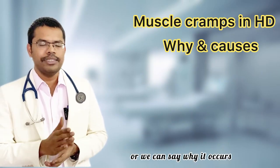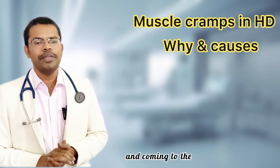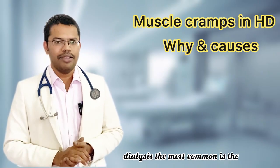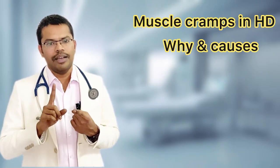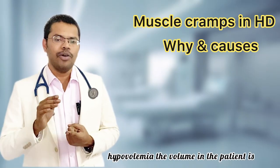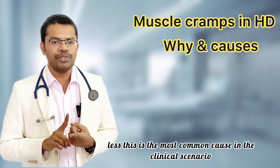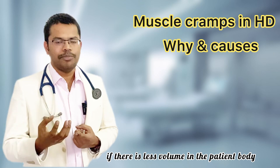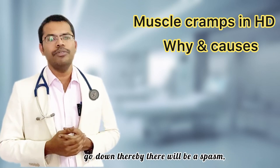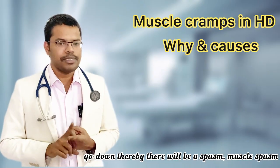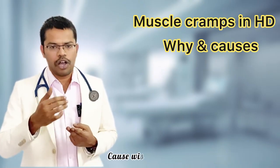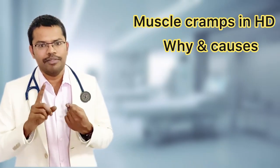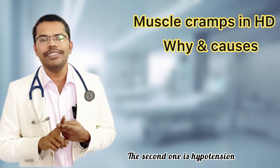These are the pathophysiology — why it occurs. Coming to the second part, what are all the causes during dialysis: the most common is hypovolemia — the volume in the patient is less. This is the most common cause in the clinical scenario. If there is less volume in the patient's body, obviously the perfusion to the muscles will go down, thereby causing muscle spasm. The second cause is hypotension.